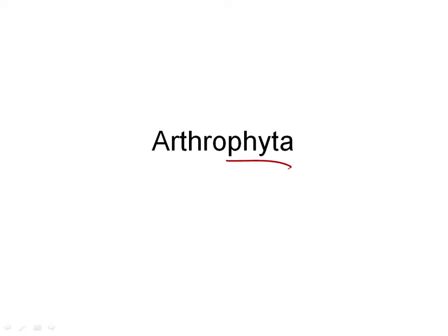Phyta, of course, is the division name for the plants. Arthros means jointed. You know that name from other organisms — arthropods, jointed feet. So it's a descriptive name. Arthrophyta means jointed plants, and we'll see why they're called that.